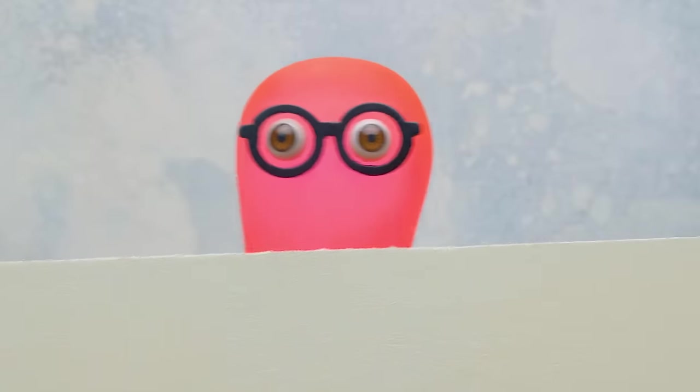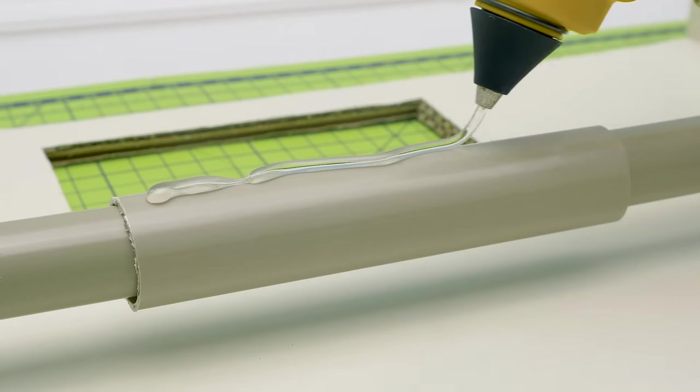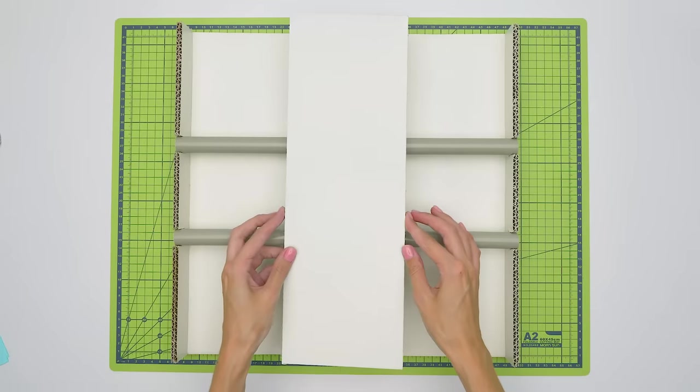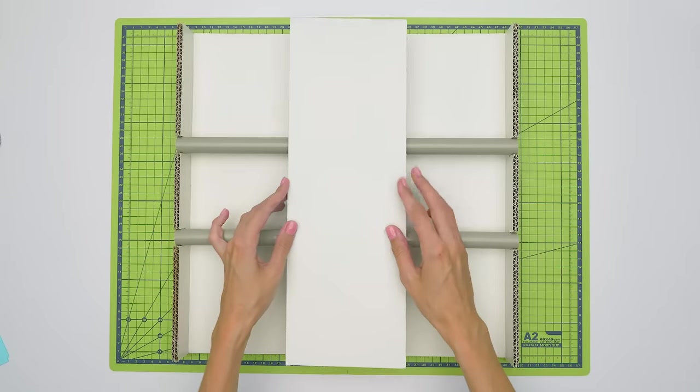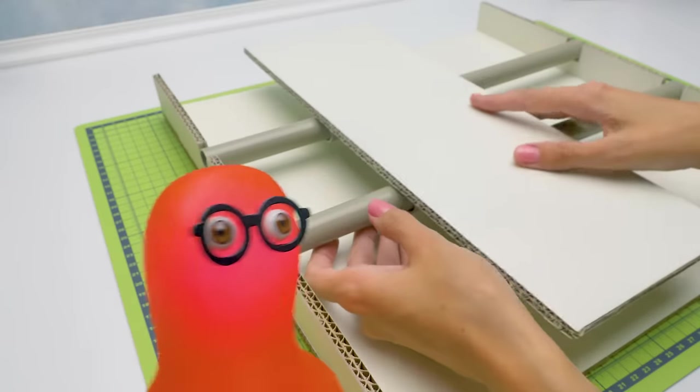You have the cardboard? What's next? We'll apply some glue here. Now, carefully, the pipes should be aligned like this. Now it looks like a railway but made of pipes.